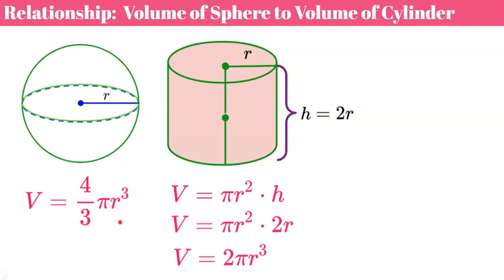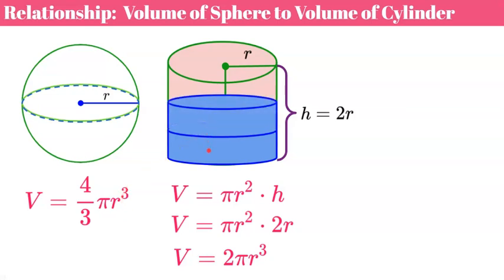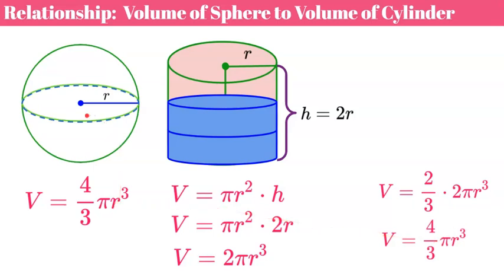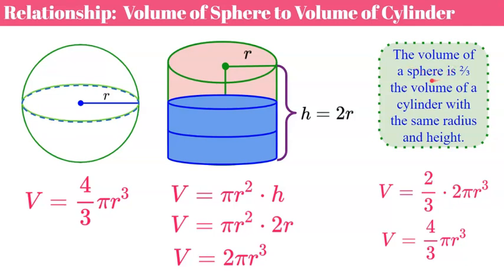Now we compare this to the volume of the sphere. One sphere will fill a cylinder with the same radius and height two-thirds of the way full — just as it took three cones to fill that cylinder. Two-thirds of 2πr³ gives four-thirds πr³, and it matches the sphere formula. So if you filled a sphere with water and poured it into a cylinder with the same radius and height — where the height equals the diameter — it would be two-thirds full. The volume of a sphere is two-thirds the volume of a cylinder with the same radius and height.